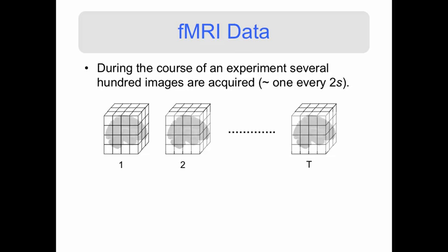During the course of an experiment, several hundred such images are acquired, roughly one every two seconds or so. Basically, the data looks as follows: we have 100,000 measurements taken at time 1.